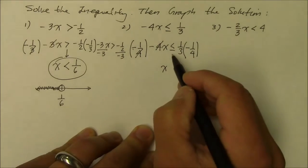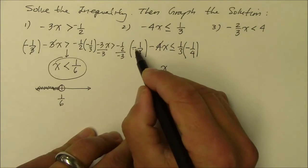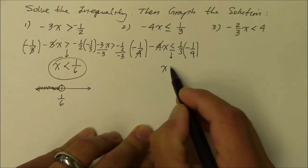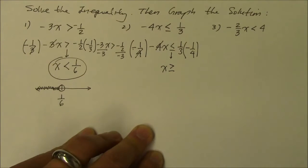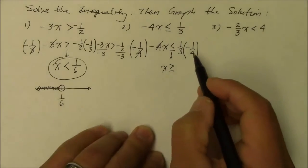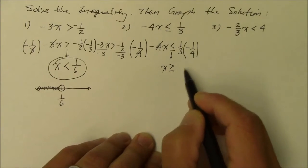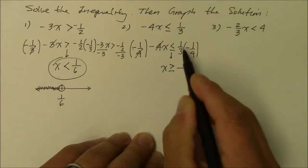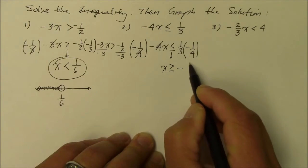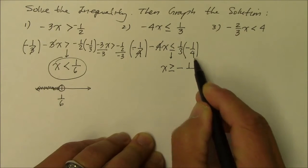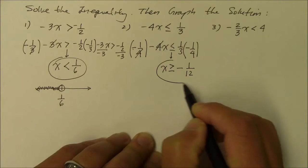And remember, when you multiply or divide a negative, the direction of the inequality must change. And, on the right side, positive and a negative becomes a negative. And, 1 third times 1 fourth, 1 times 1 numerator is 1. 3 times 4 denominator is 12. There's your numeric answer.